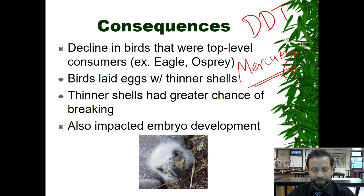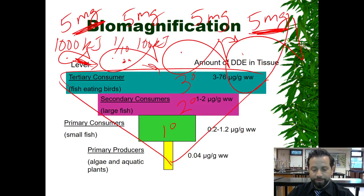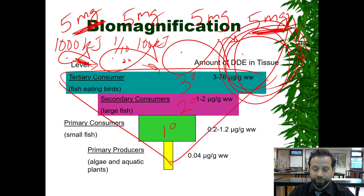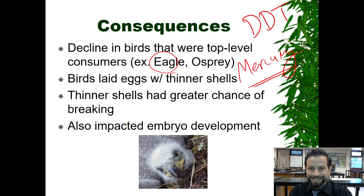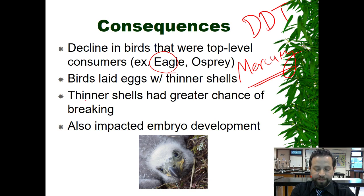There's actually a decline in birds that are top-level consumers. When you think about which ones are affected the most, it's these top-level consumers that are impacted the most when it comes to a toxin in the environment. Some examples are eagles. Birds that lay eggs with thinner shells have been shown to have a higher amount of toxin in their body. Thinner shells have a greater chance of breaking, and this can also impact embryo development.